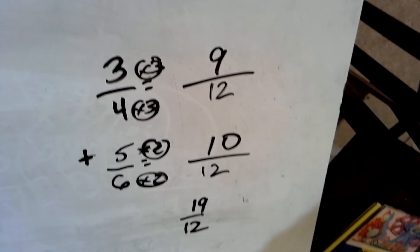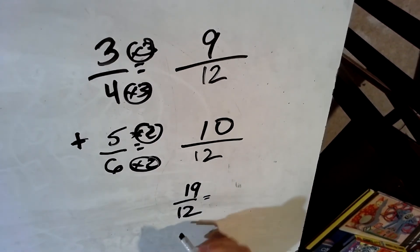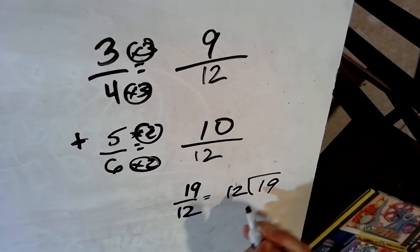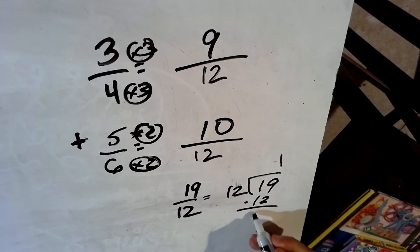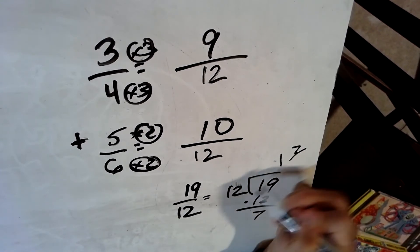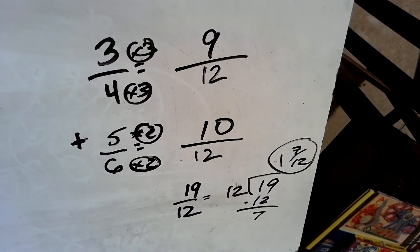And 19 twelfths is an improper fraction. Let's make that a proper fraction. I know 19 divided by 12, 12 goes into 19 one time with 7 left over out of 12. So 1 and 7 twelfths would be the sum.